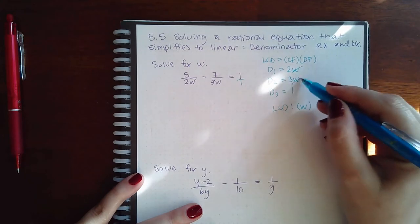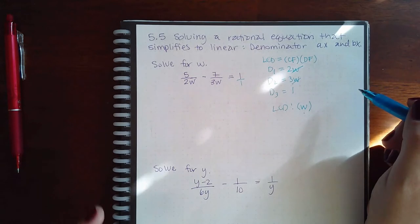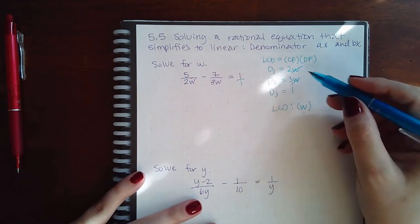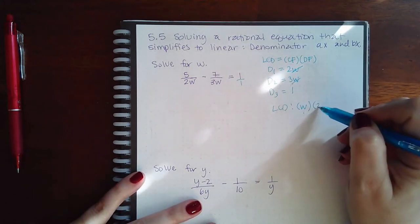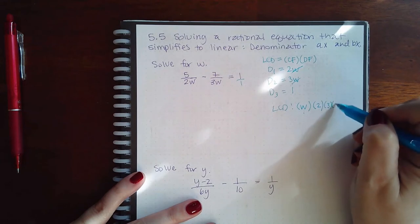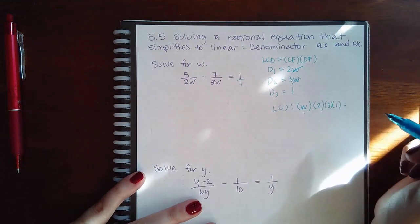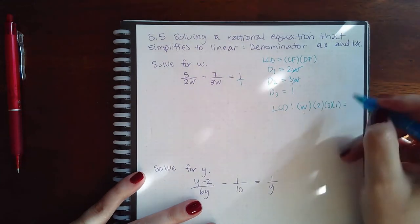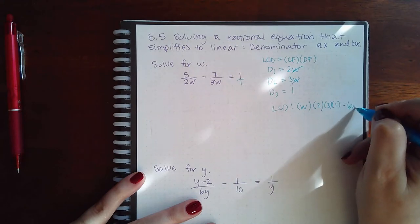These are spoken for with that W written once. Now the distinct factors would be all of those numbers, 2, 3, and 1. And so then when I multiply all of that together, I end up with 6W.